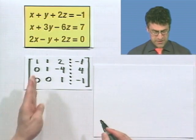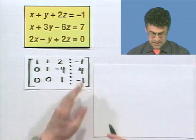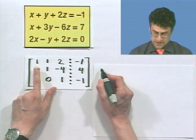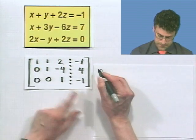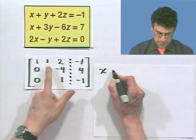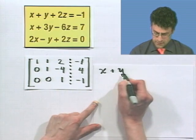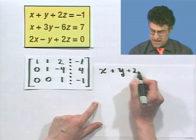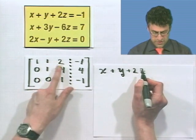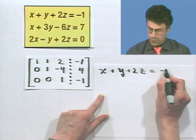The first equation says what? Remember, this is the x's, the y's, and the z's. So this says 1x, which is just x, plus 1y, plus 2z. Do you see how I picked up the 1, 1, 2 as the coefficients? Well, that equals negative 1.